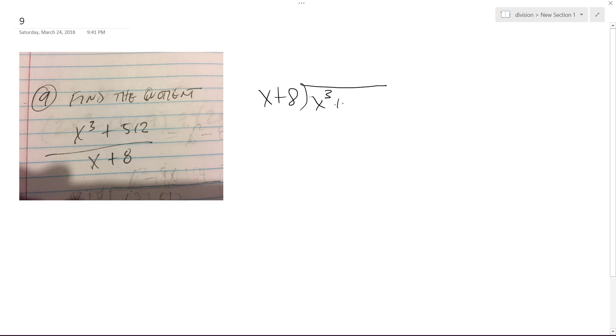The trick here is I'm going to write x cubed and I'm going to write 0x squared plus 0x, because you can't skip those, plus 512.